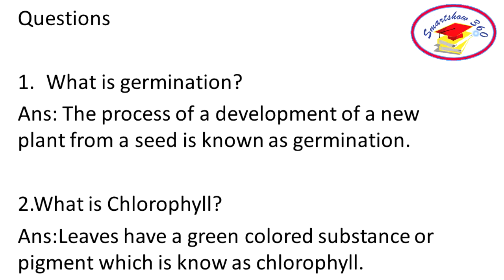Question 2. What is chlorophyll? Answer: Leaves have a green colored substance or pigment which is known as chlorophyll.